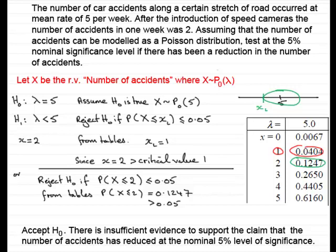Just suppose we had found one accident in one week rather than two. We would carry out the same test and still find the lower critical value is one, but this time x equals one would be in the critical region in the lower tail, so we would have to reject H0 - there would have been a decrease in accidents. The actual significance level in that case would be just over four percent: the probability of being less than or equal to one is 0.0404, which is 4.04 percent.